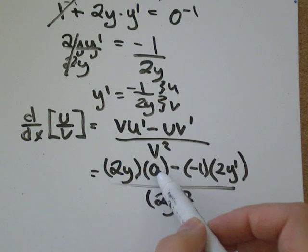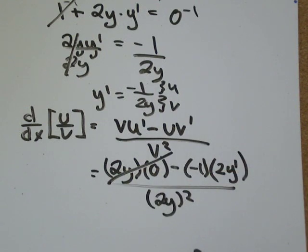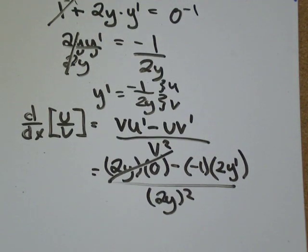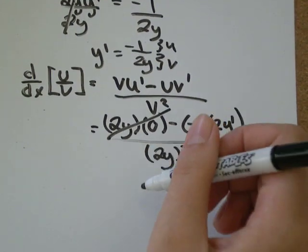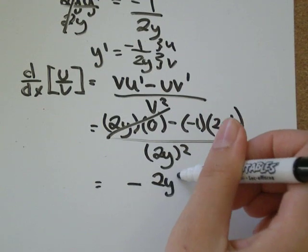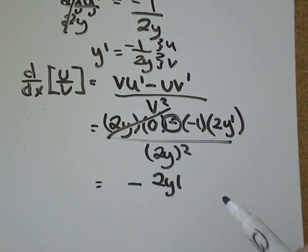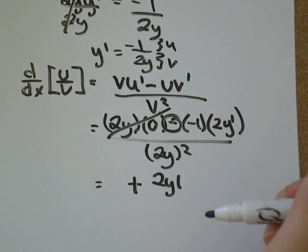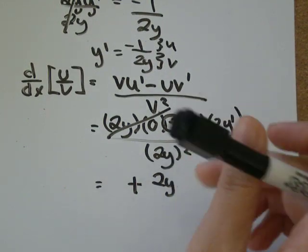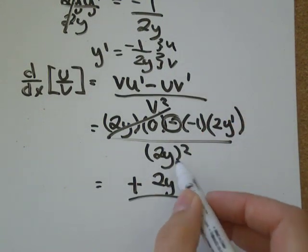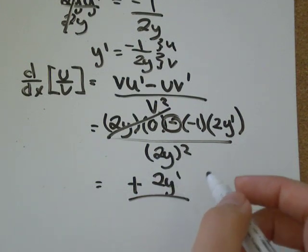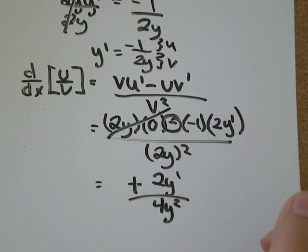So 2y times 0 is just 0. Negative 1 times 2y' would be -2y', but it was minus -2y'. So the negative times the negative just becomes the addition sign. 2y squared means 2y times 2y, which would be 4y².